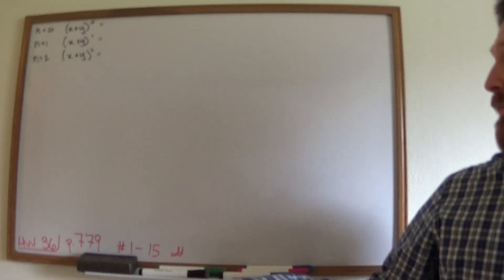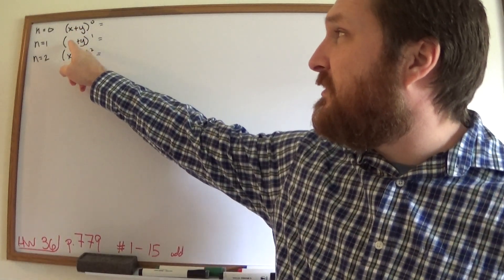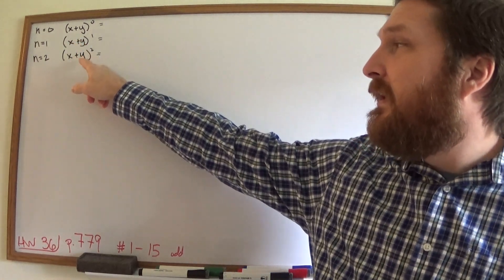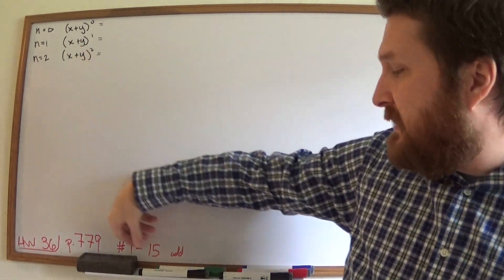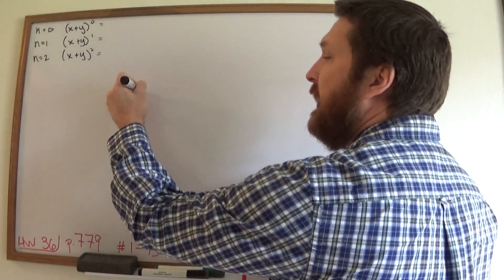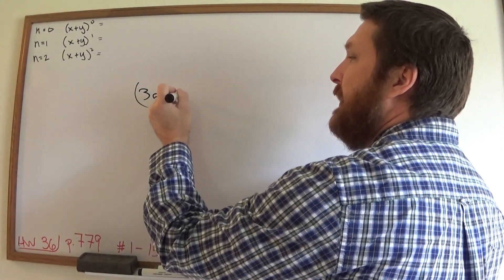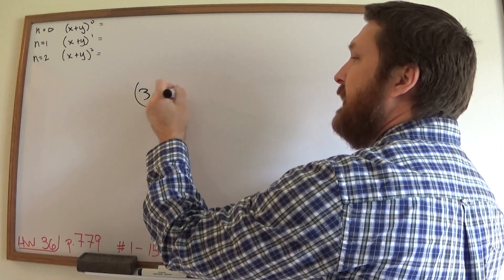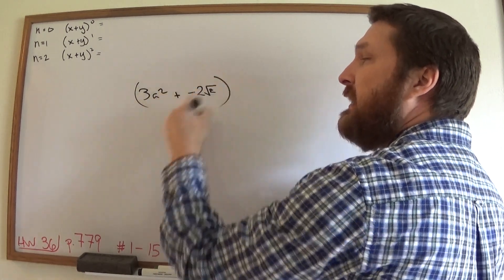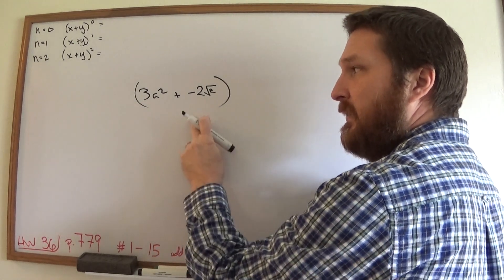Today we're doing the binomial theorem. These, by the way, are binomials — there are two terms, right? X and Y could be anything. Like X could be 3A squared and Y might be negative 2 times the square root of Z, right? It could be anything here.